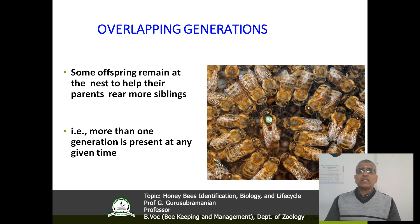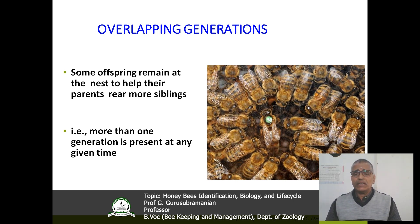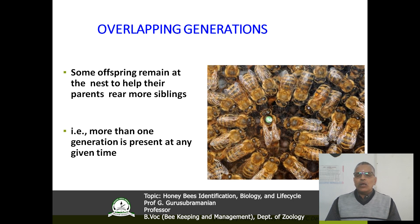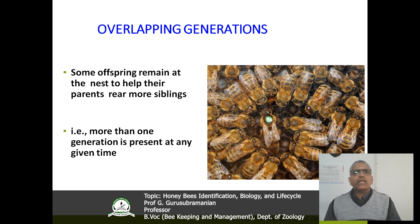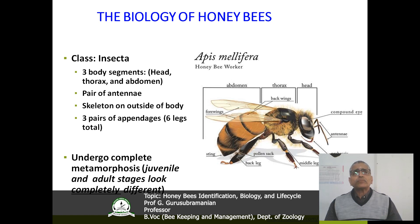The third criteria is the overlapping of generations. Some offspring remain at the nest to help their parents rear more siblings. That means more than one generation is present at any given time. These three criteria are why we say the honeybees are coming under eusocial insects.